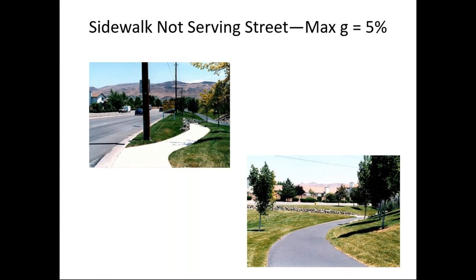Here's an example: a sidewalk along an arterial that then takes off on a path away from the roadway to serve a multi-use trail. That section of sidewalk does not serve the arterial street, so its maximum grade would be 5% under ProAg. The section looks pretty close to five percent — it may actually exceed it — and because it doesn't serve the street, the 5% maximum applies.